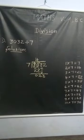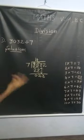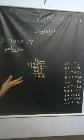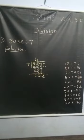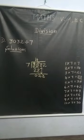We have 3 steps. First step: check the table. Next step: subtract. Third step: bring down the number.